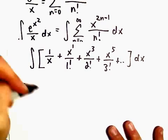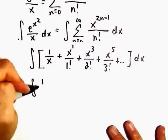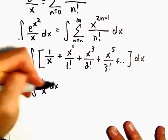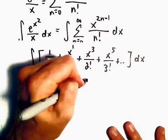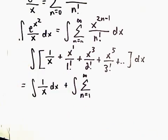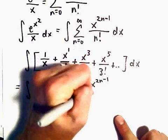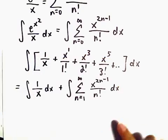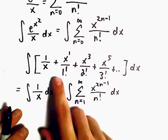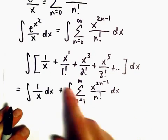When we integrate, I'm going to rewrite this as the integral of 1/x dx plus the integral of the series from n=1 to infinity of x^(2n-1) over n factorial. Now we've started at n=1, which will take care of all the factorial terms.